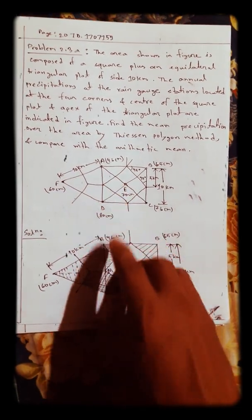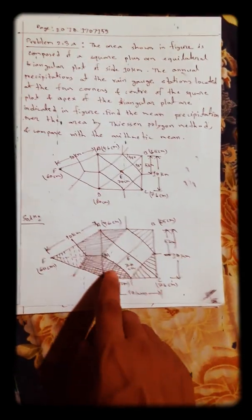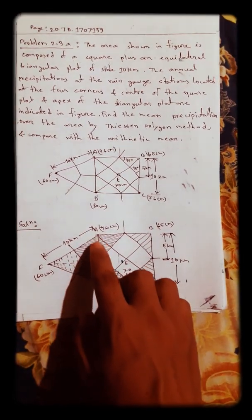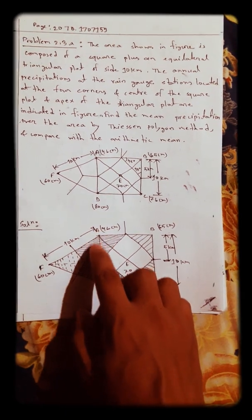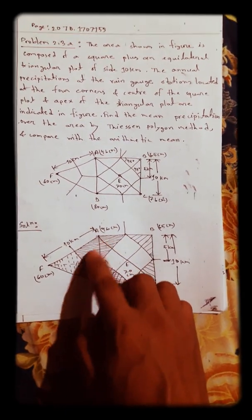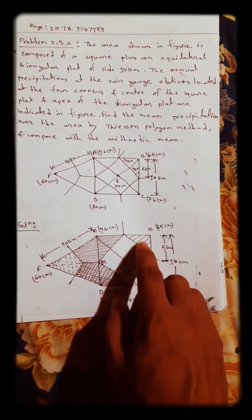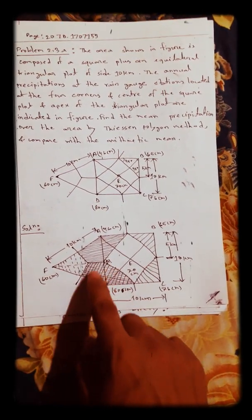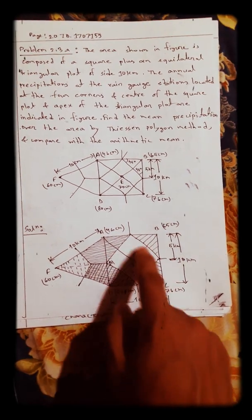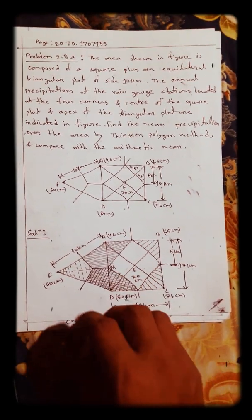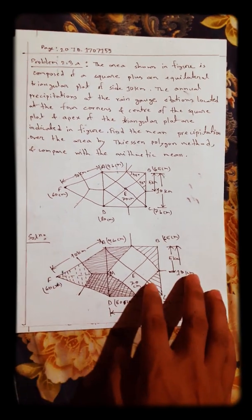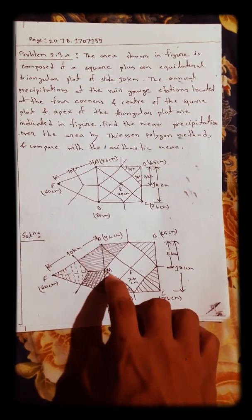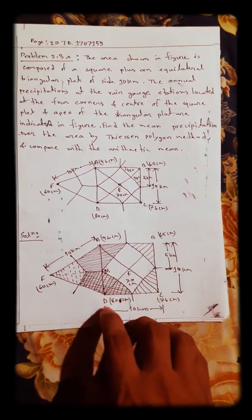For a better view of the solution, we label the areas: this area is A, this is area B, this is area C, this is area D, this is area E, and this is area F. The middle point is M.